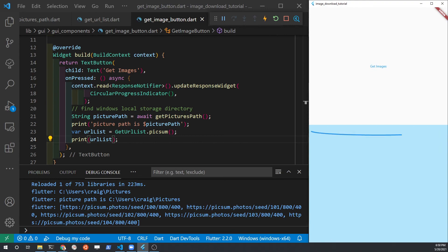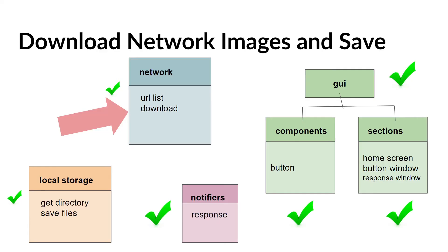Fantastic, it works! Congratulations, we're well on our way to finishing our application. There are actually only two more steps left. Since we already have this URL list and have verified with a browser that it is an actual image URL, all we need to do is use an HTTP GET from the Flutter package to download the image into system memory. Once it's in system memory we can save the file. We've already figured out the path for the Windows pictures folder in a previous video, so we'll create a subfolder automatically with the program and save the file as bytes to local storage.